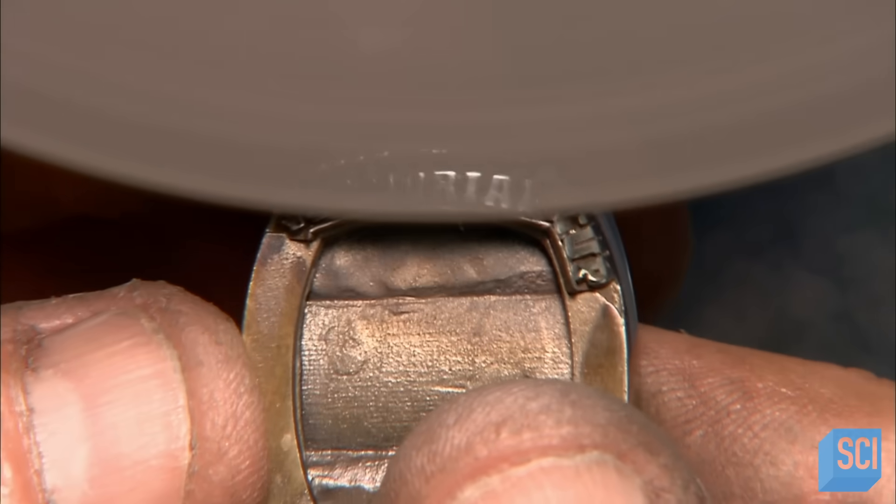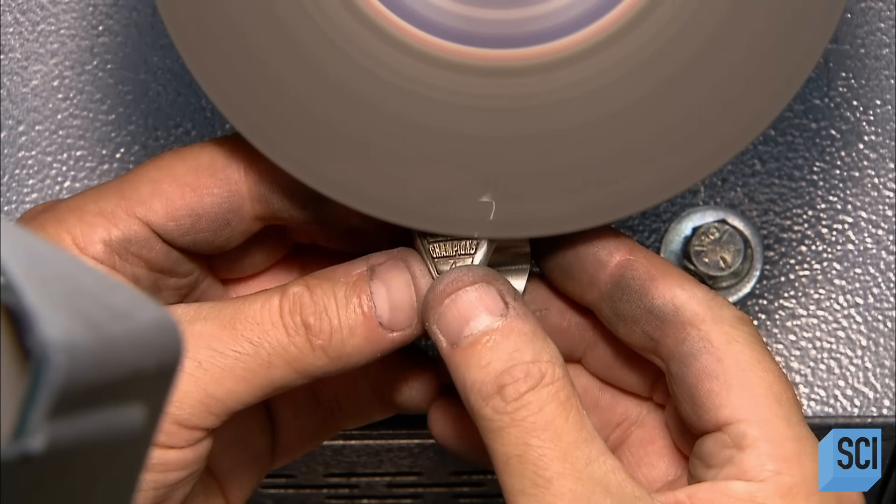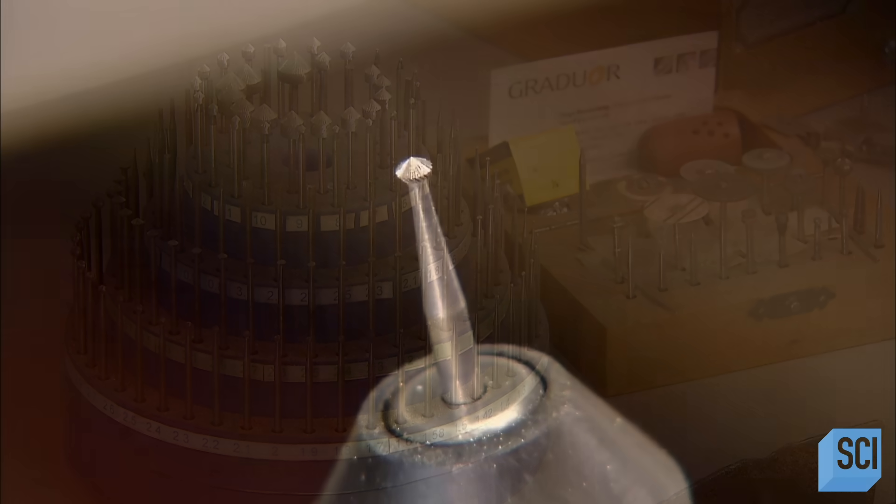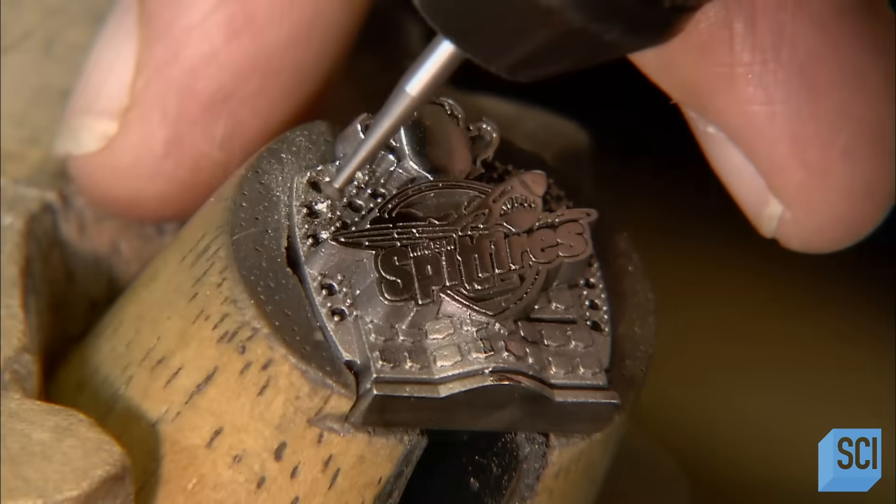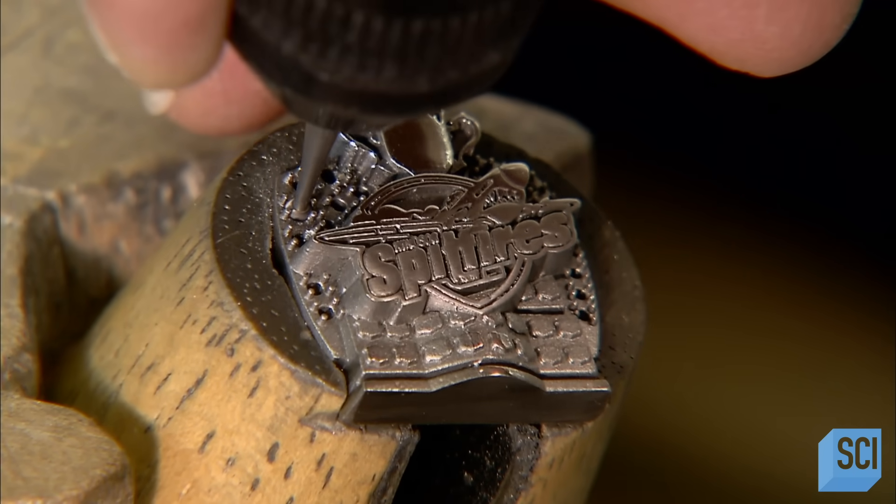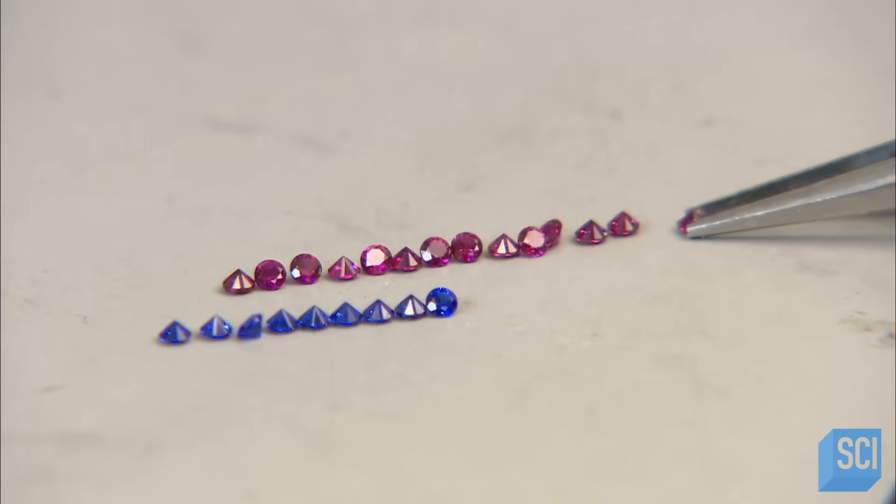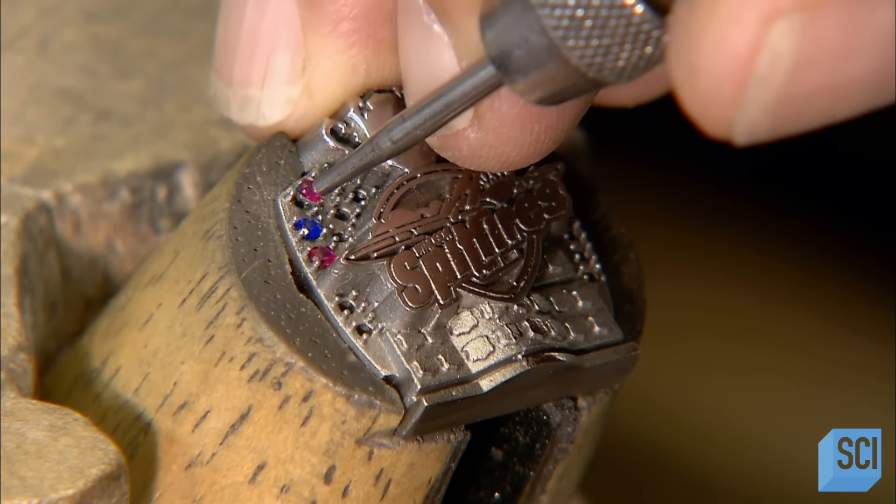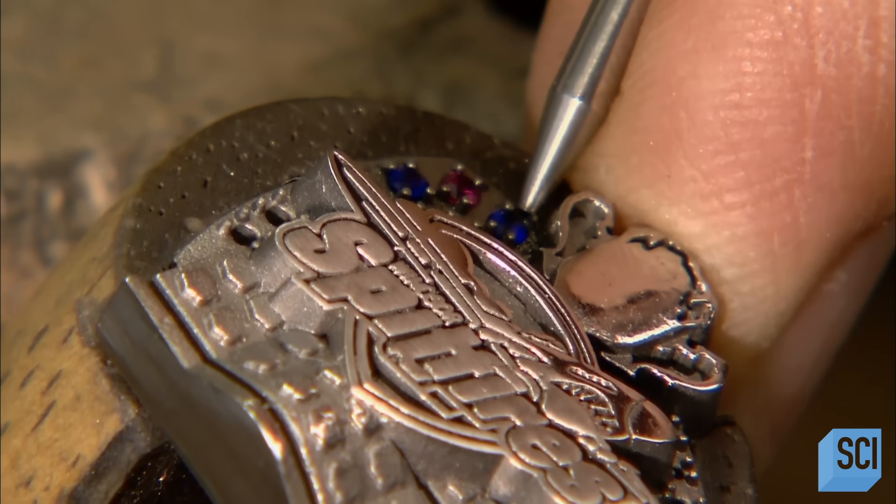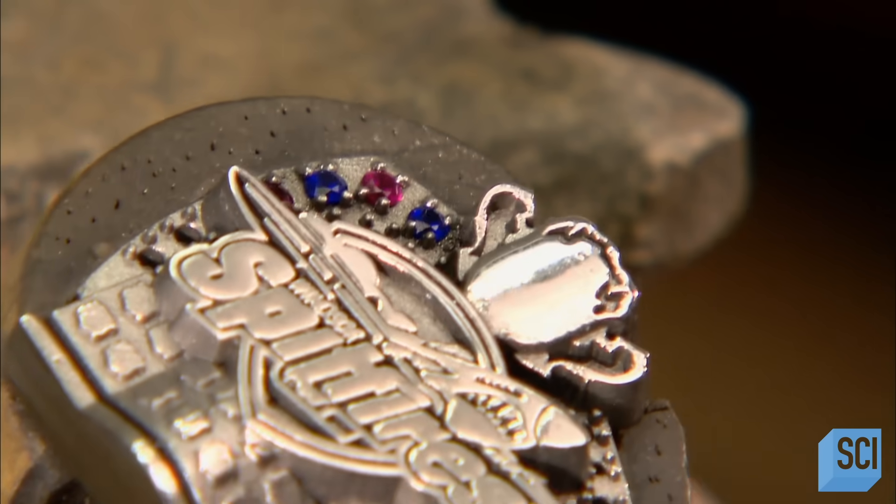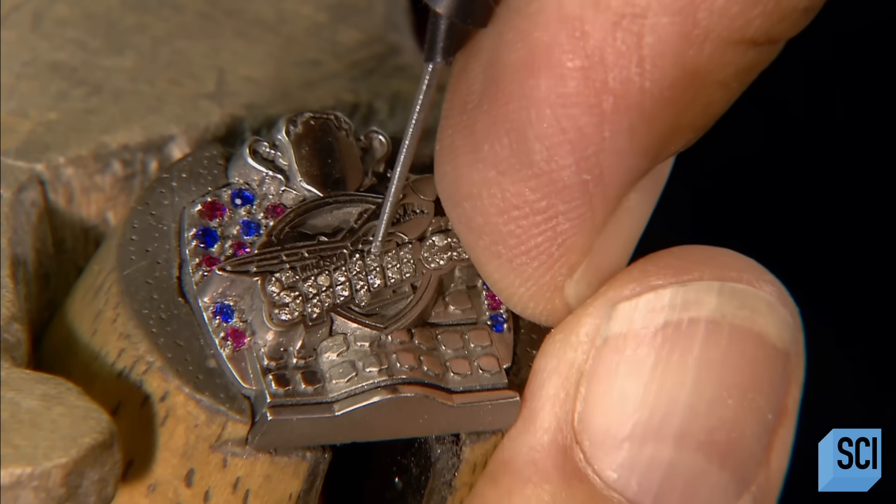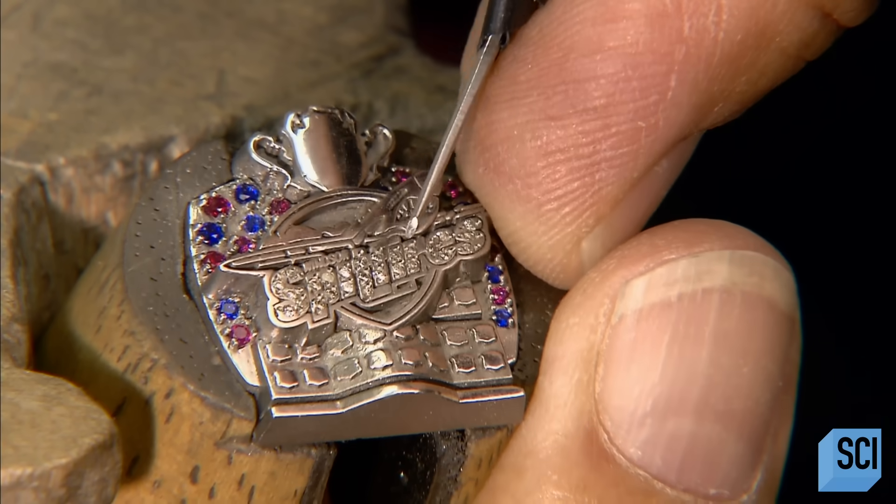Next, the top of the ring goes to the stone setting department where, using a fine rotary tool, a specialist contours each setting to fit the gemstone's pointed base. Then he sets each gemstone, forcing down the four surrounding prongs onto the edge of the stone. Next, he sets tiny diamonds. He presses each one into place, then pushes the surrounding metal inward to hold the stone down.